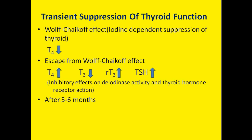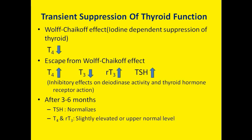This is due to the inhibitory effects on deiodinase activity and thyroid hormone receptor action of amiodarone. After using amiodarone for three to six months, TSH returns to its normal level, T4 and rT3 levels will be slightly elevated or in the upper normal range, and T3 level will be in the low-normal range.